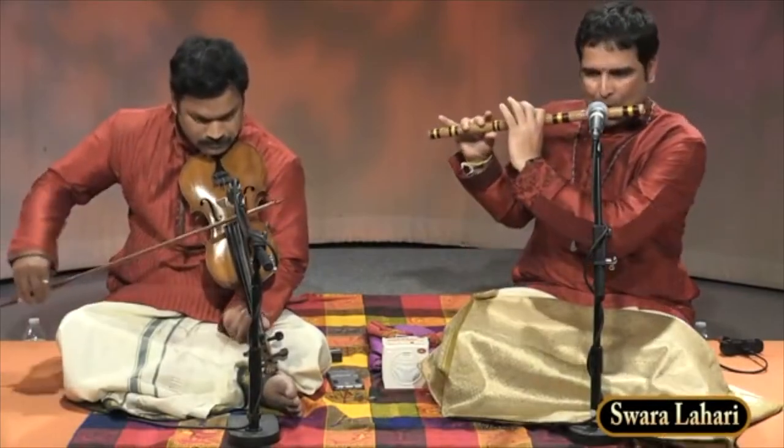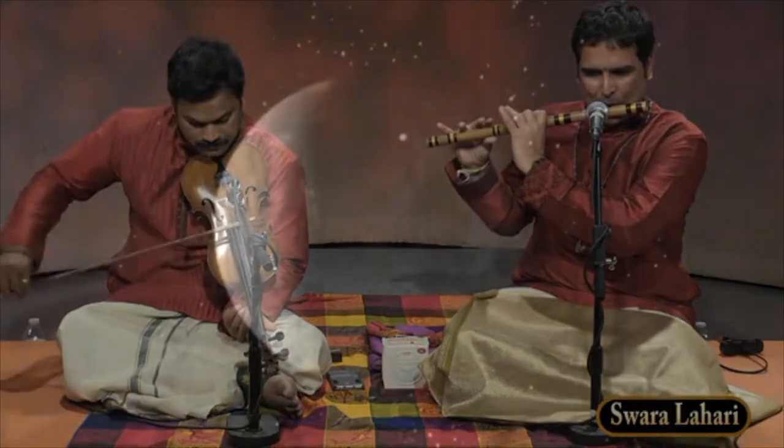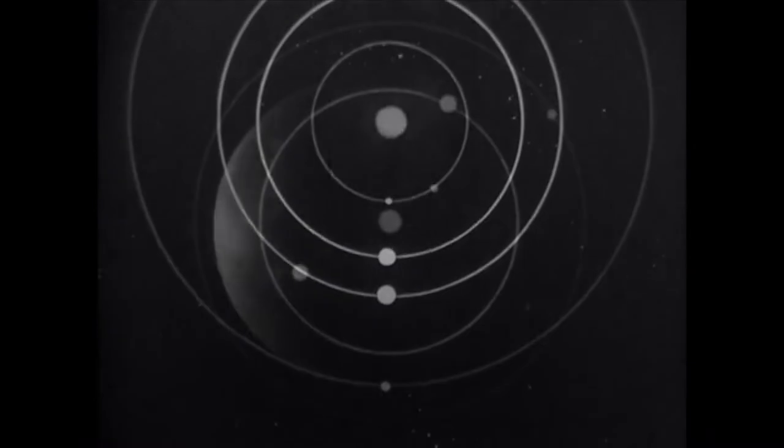How can a string vibrate at a fundamental frequency and also harmonic frequencies at the same time? Why do a flute and a violin playing the same note have different harmonics, and what does this have to do with planetary motion?